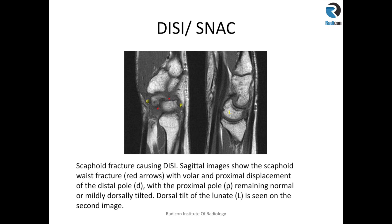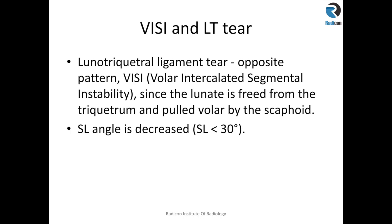Here is a case of SNAC wrist. There is a fracture through the scaphoid: the distal pole is displaced more towards the volar aspect, while the proximal pole remains attached to the lunate. Measuring the angle along the long axis of the proximal and distal poles of the scaphoid and through the lunate gives an increased scapholunate angle, consistent with SNAC wrist.